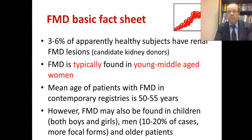FMD is typically found in young middle-aged women. The mean age of patients with FMD in contemporary registries is 50 to 55 years. FMD may also be found in children, both boys and girls. In men, 10 to 20% of cases show a more focal form, and FMD occurs even in older patients. So FMD affects predominantly young middle-aged women but can be found in both genders at all ages.